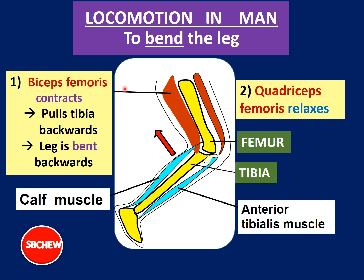The important thing is to know the action of these muscles in bending and straightening the leg. When a person wants to bend his leg, the biceps femoris contracts. Looking at where the muscle is attached — biceps femoris is attached to the tibia at the back. When it contracts, it pulls the tibia backward, and the leg bends. So biceps femoris contracts, pulls the tibia backwards, and the leg is bent at the knee.